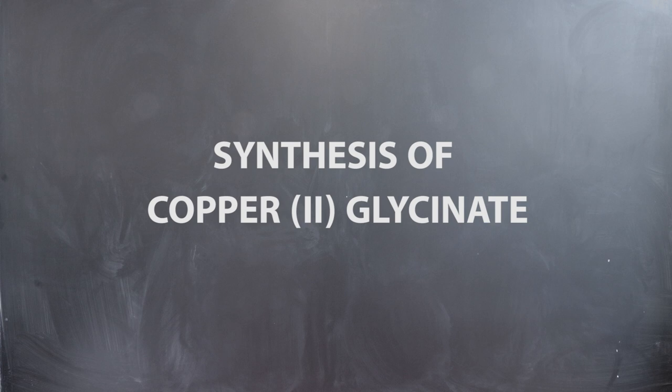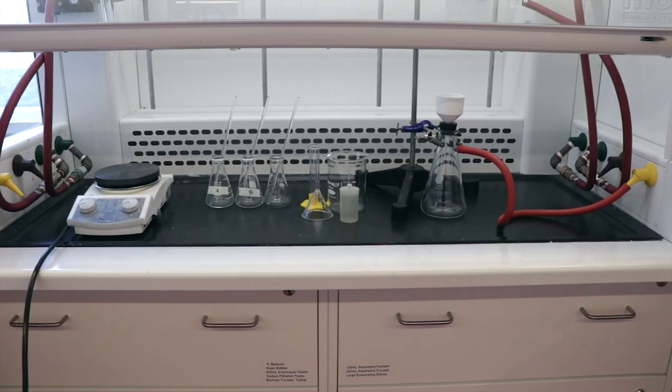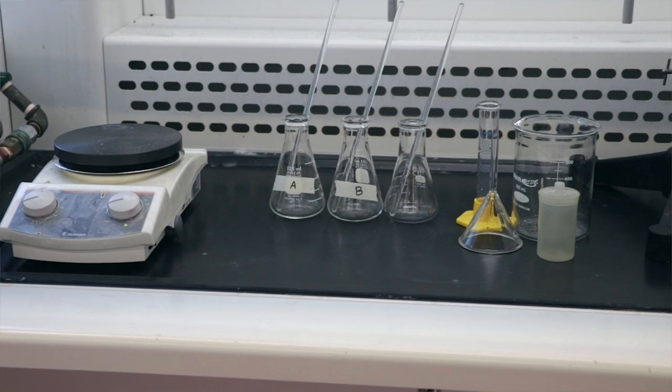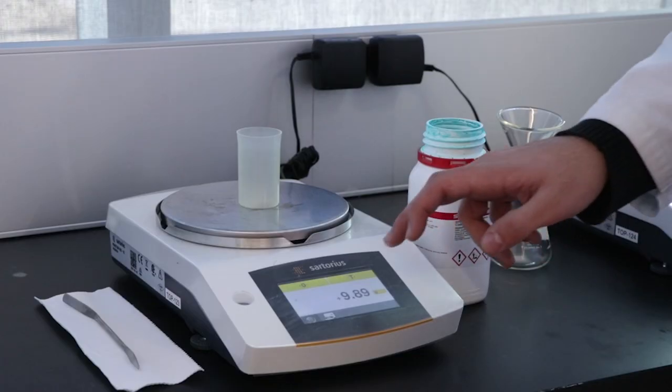Synthesis of copper glycinate. In today's experiment, you will be reacting copper acetate and the simplest amino acid, glycine, to synthesize copper glycinate monohydrate. This is the apparatus we will be using for this lab. All glassware can be found in your locker.